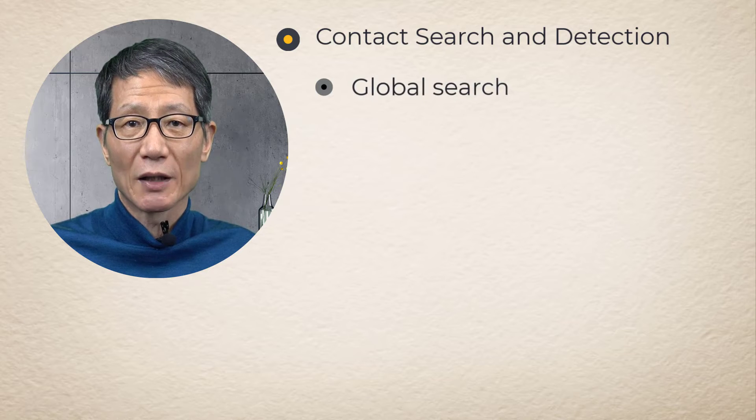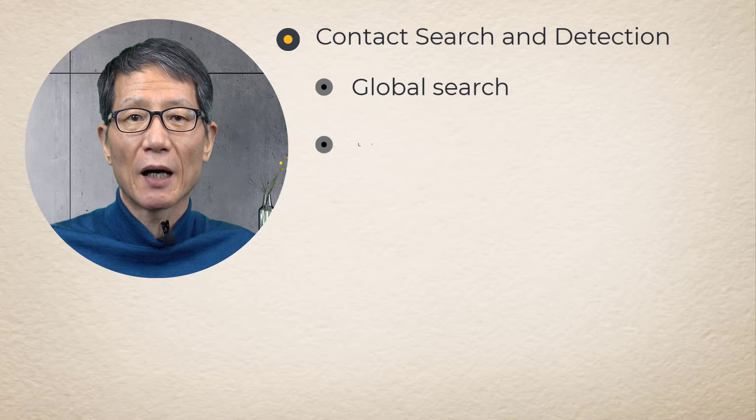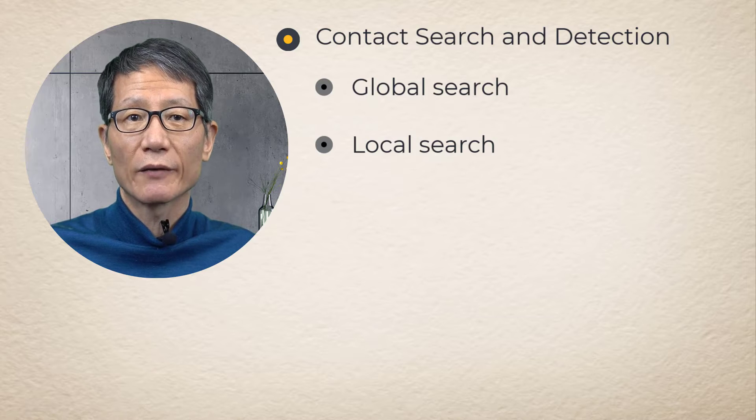The first part is the Global Search, which roughly finds out a contact region. The second part is the Local Search, which finds the exact location of a contact.